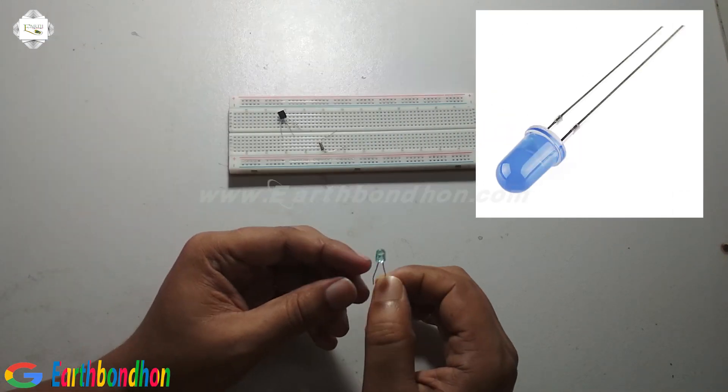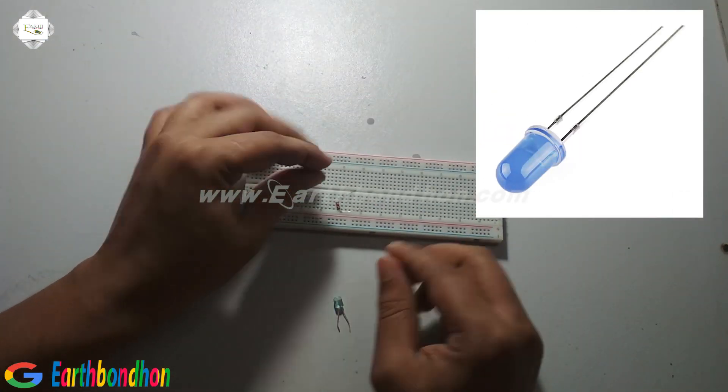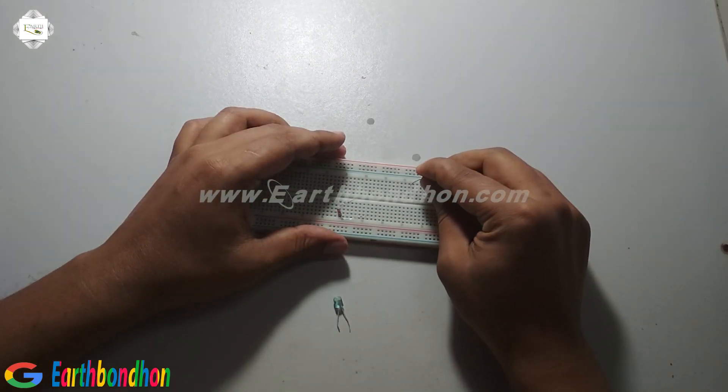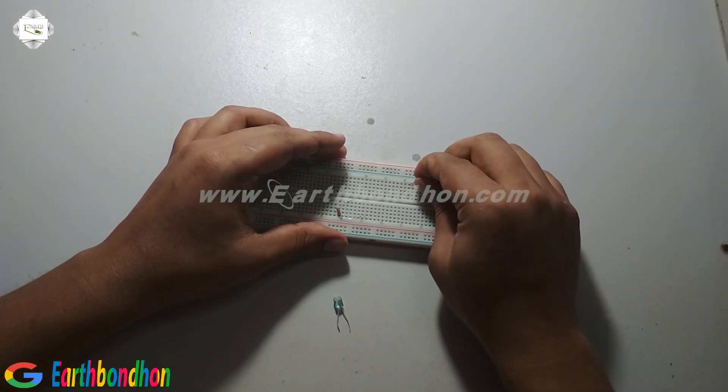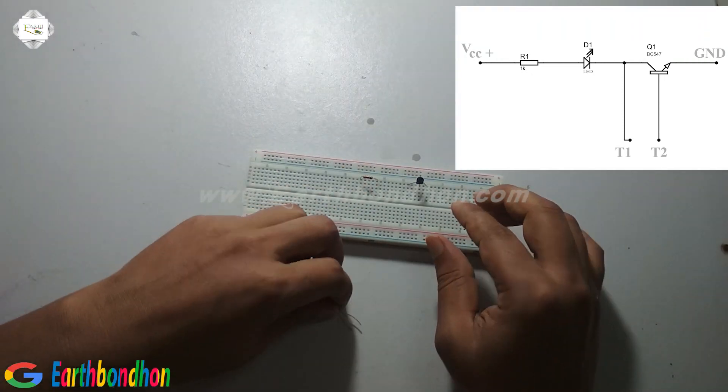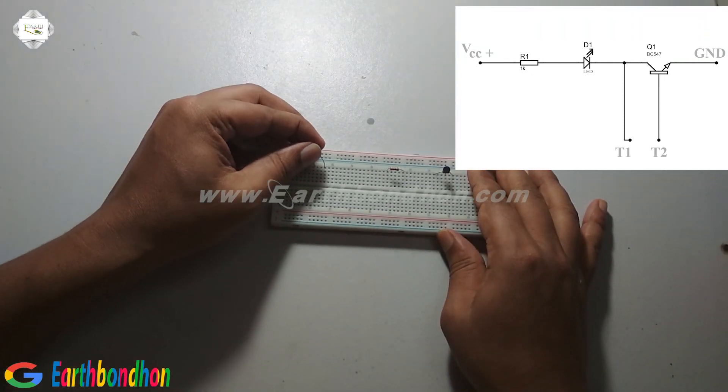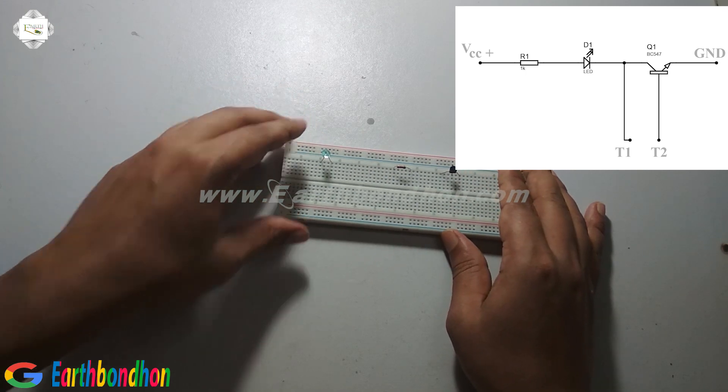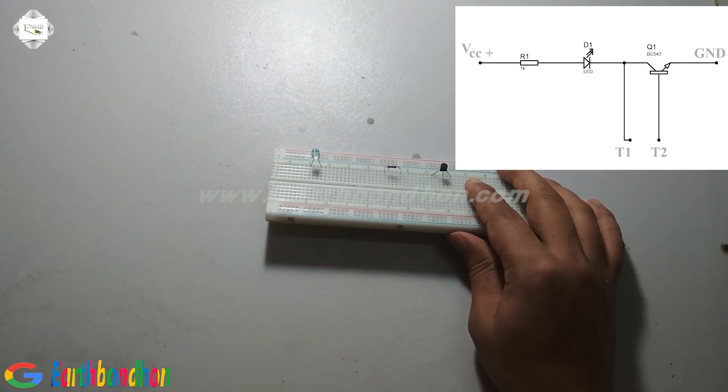First I set the transistor and resistor. This is the LED, the transistor number.